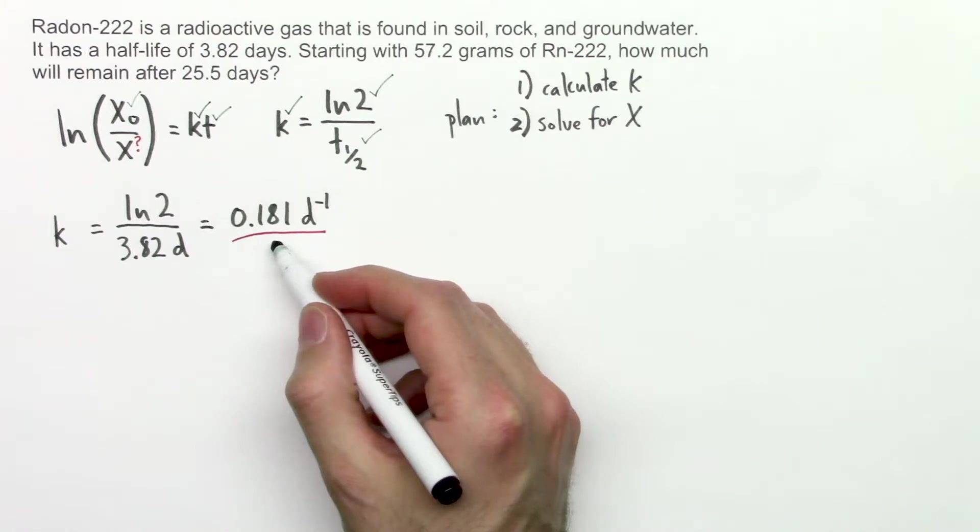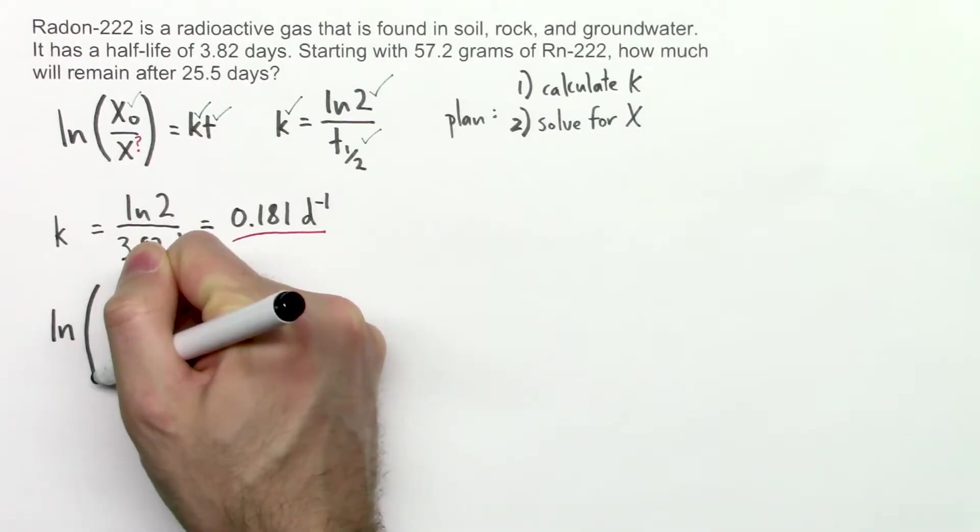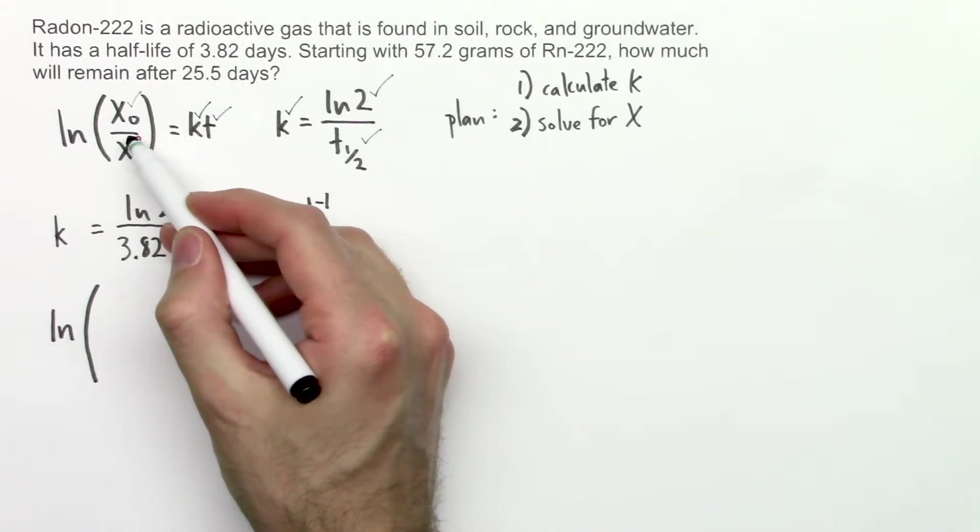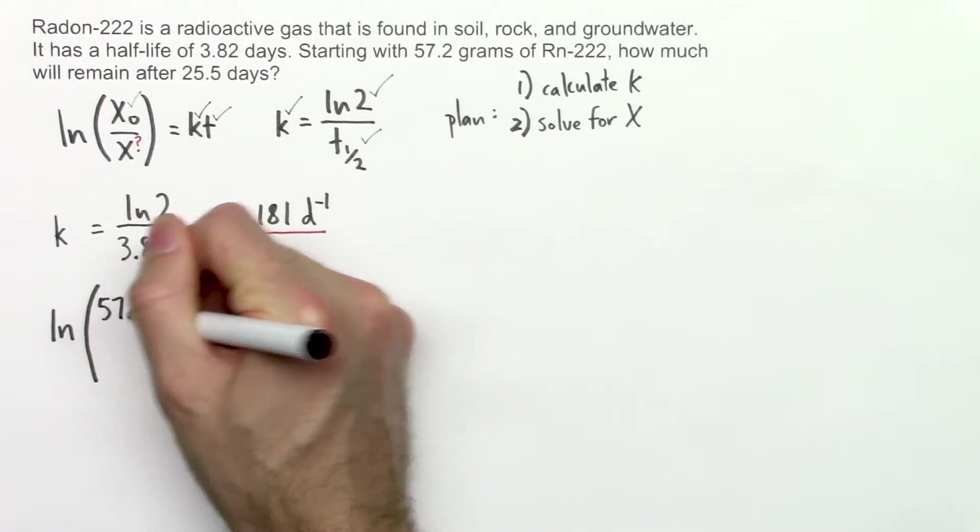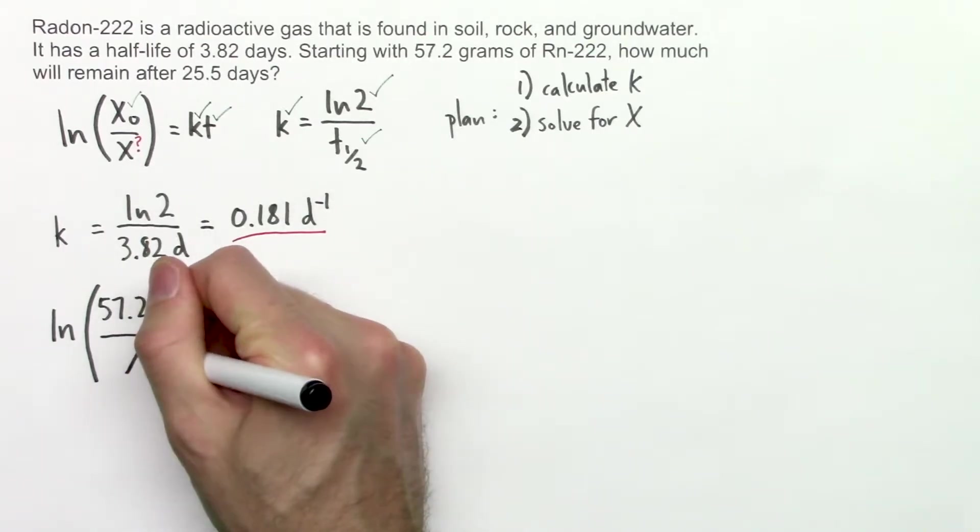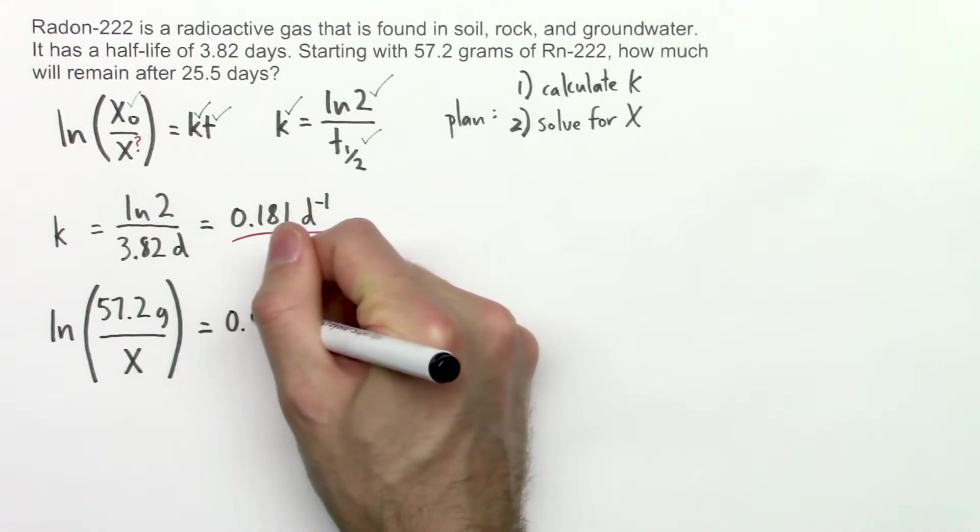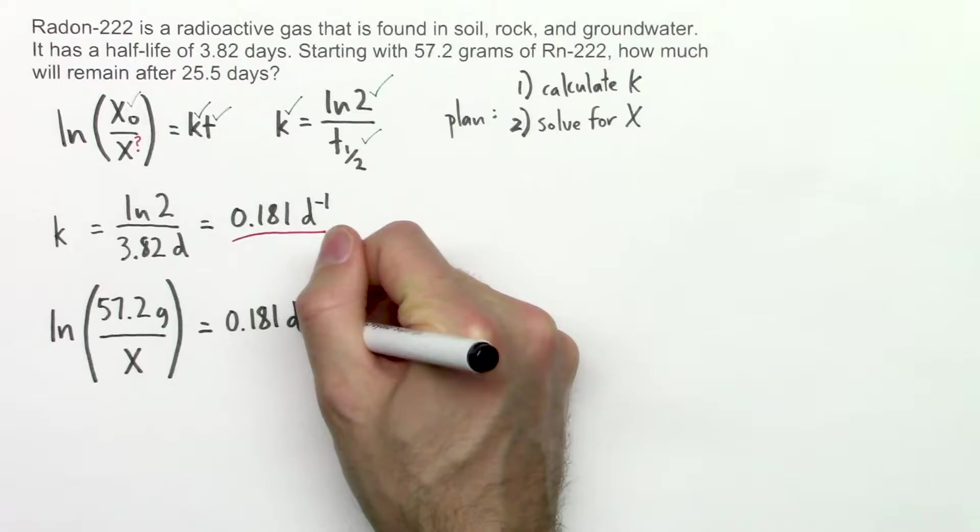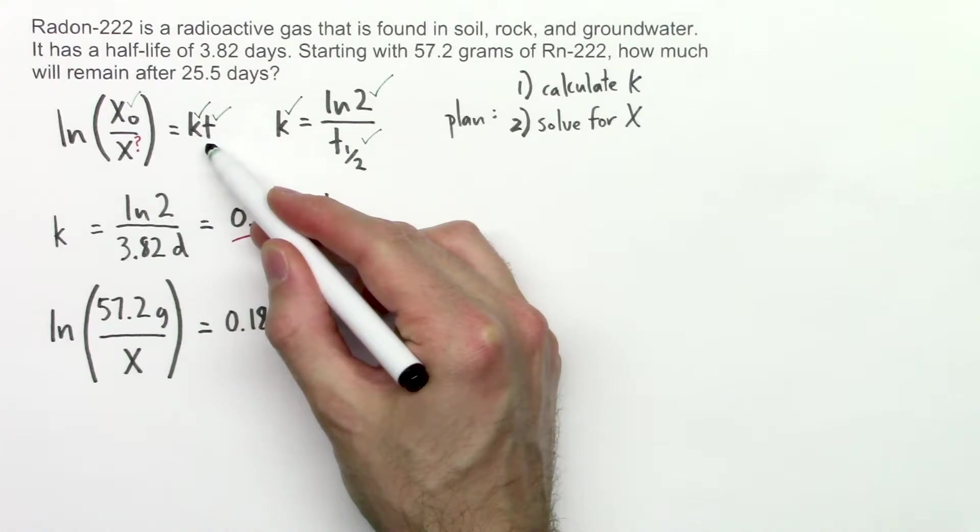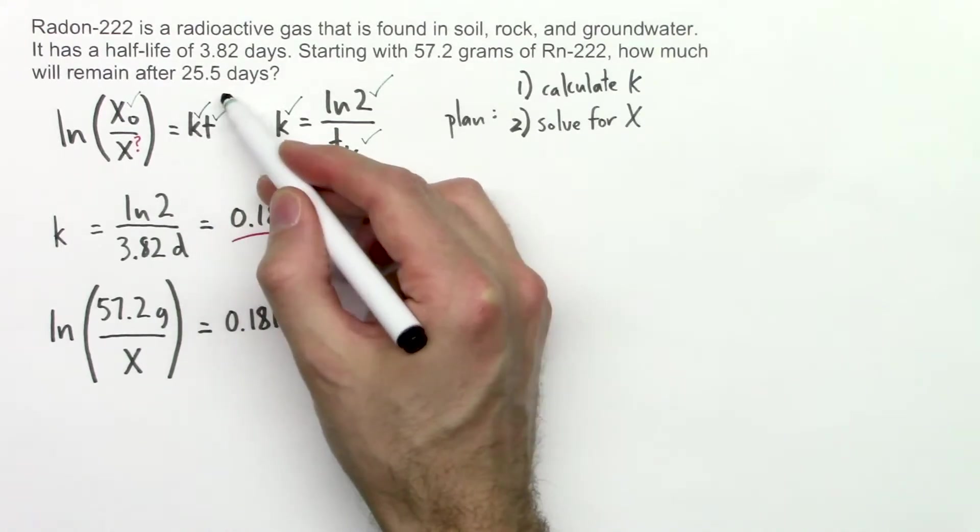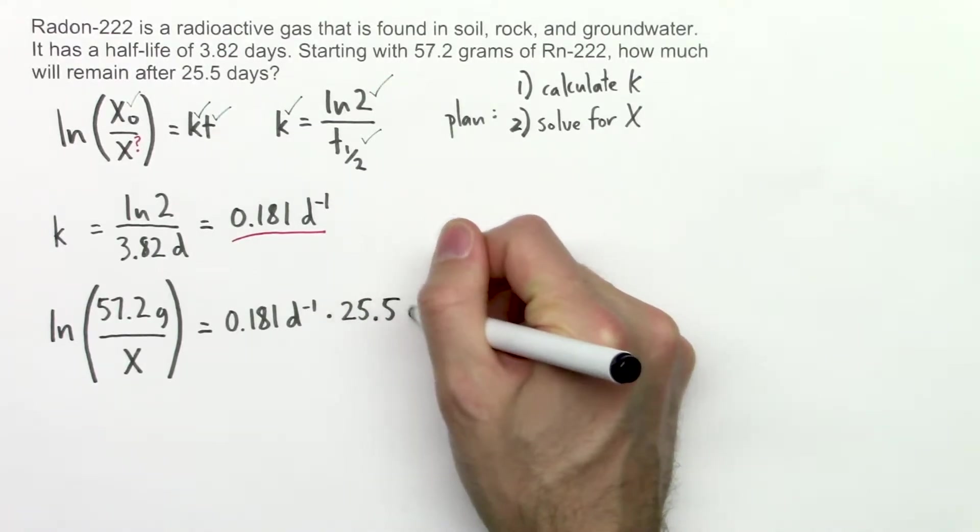Now that we have a value for k, let's go ahead and start plugging things into this equation. x sub 0. Do we know that? Yeah, we do. We're starting with 57.2 grams. And then x is what we're solving for. k equals 0.181 inverse days, times t, which is the amount of time that elapses, or goes by, 25.5 days.